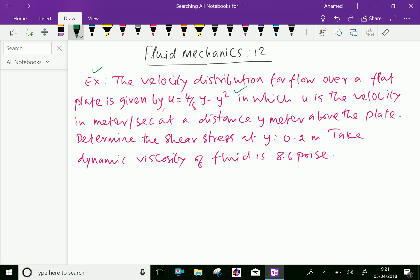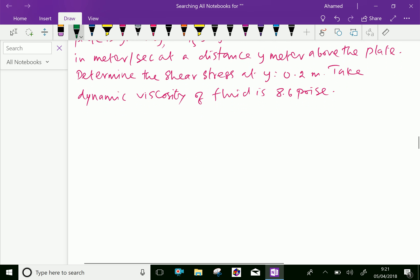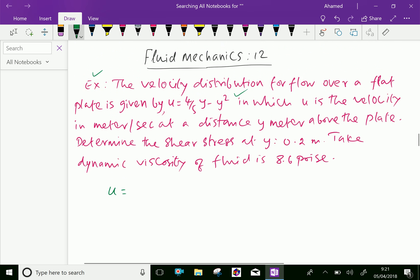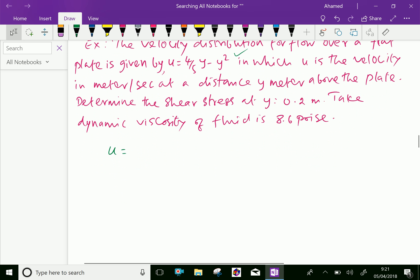Now, the given velocity is u = 4/5 y - y². That means the velocity distribution formula is 4/5 y minus y square.